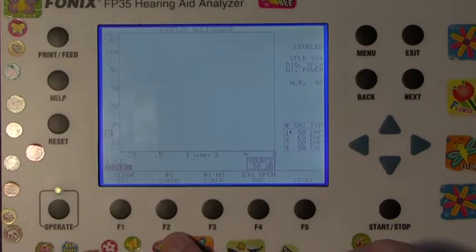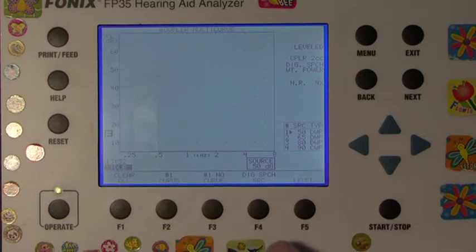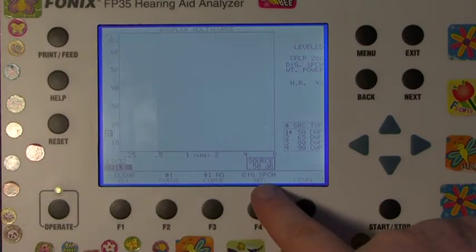Above the F2 button on the screen should read Curve 1. If not, press F2 repeatedly until Curve 1 is shown. Above the F4 button on the screen should read Digital Speech, shown as DIG SPCH.